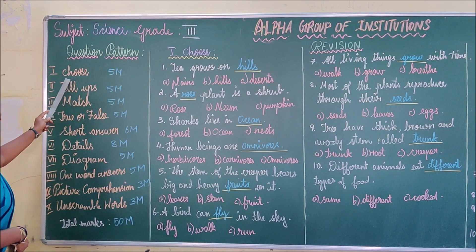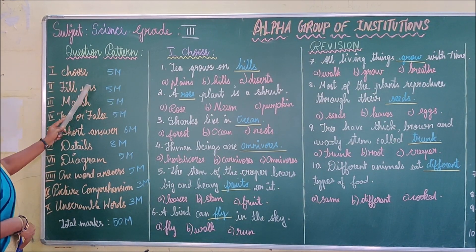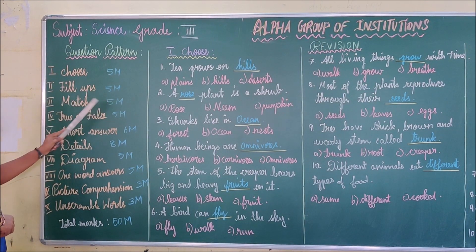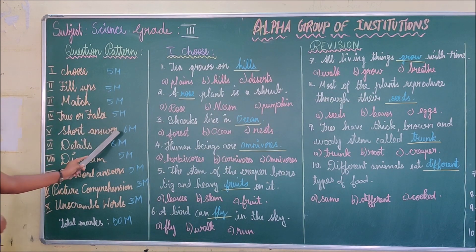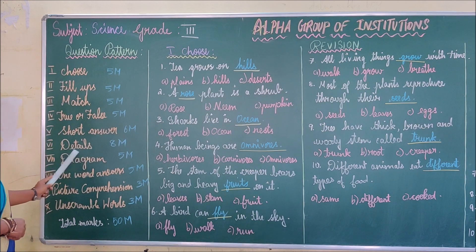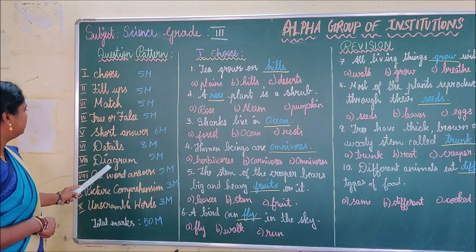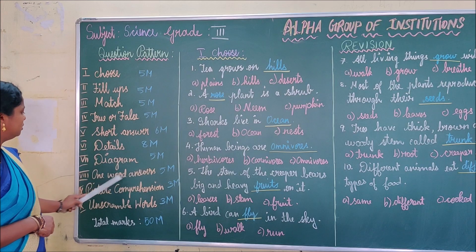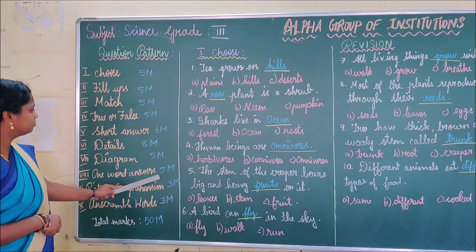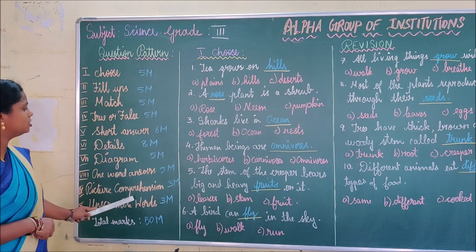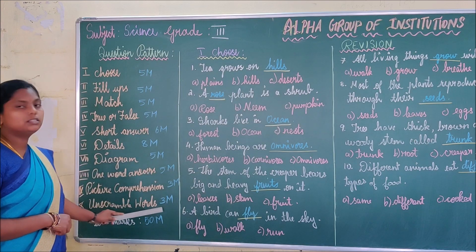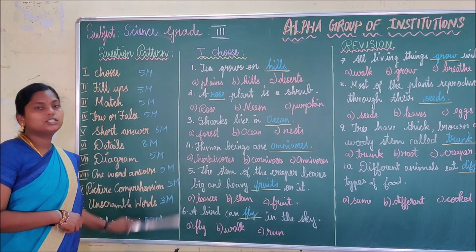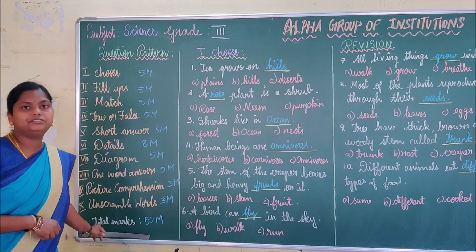Question pattern: Choose — 5 marks. Fill up — 5 marks. Match — 5 marks. True or false — 5 marks. Short answers — 6 marks. Details — 8 marks. Diagram — 5 marks. One word answers — 5 marks. Picture comprehension — 3 marks. Understanding words — 3 marks. So totally it is for 50 marks.